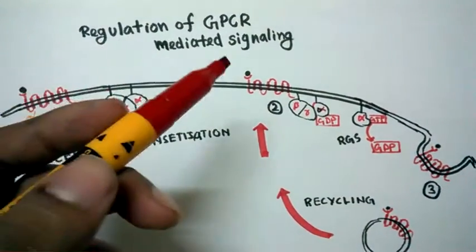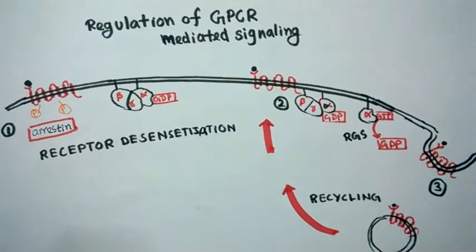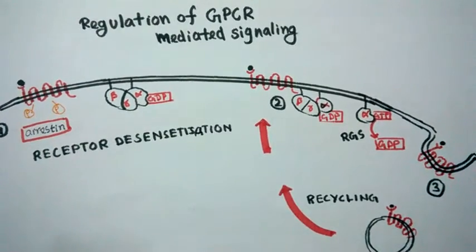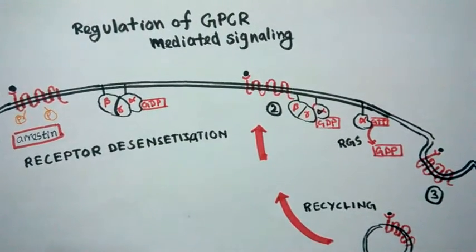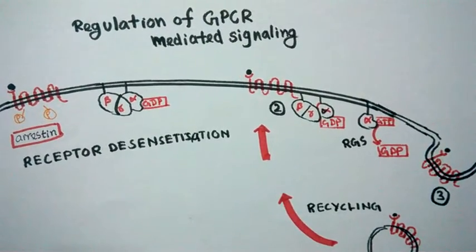In this video I'm going to talk about the regulation of GPCR mediated signaling. As we have seen earlier, GPCR mediated signaling is pretty important for chemokine receptor signaling and also in a clinical point of view. So the initiation of this signaling is important as well as the termination of the signal.